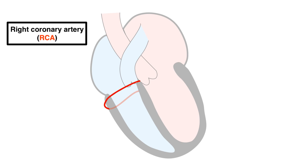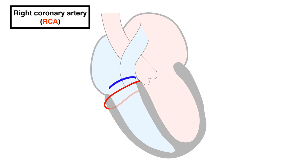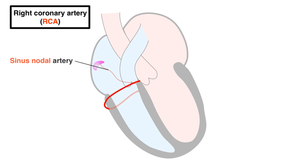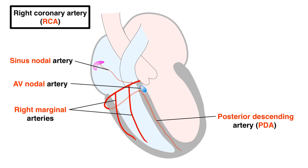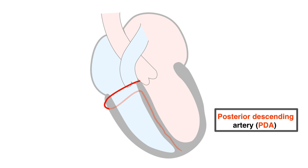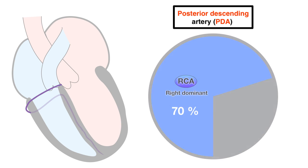The right coronary artery descends down the AV groove of the right ventricle, giving off proximally the sinus node and AV nodal arteries, as well as right marginal arteries, and later bifurcating into a posterior descending artery (PDA) and a posterolateral artery. The PDA arises from the RCA in about 70% of people, and when this occurs, the circulation is called right dominant.